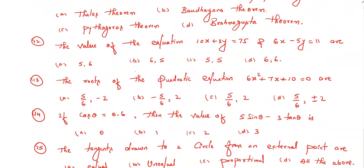Question number twelve: the value of the equations 10x + 3y = 75 and 6x - 5y = 11 are given in the form (x, y). Options are: (5, 6), (6, 5), (5, 5), and (6, 6). You have to select which among these four are the correct answers.